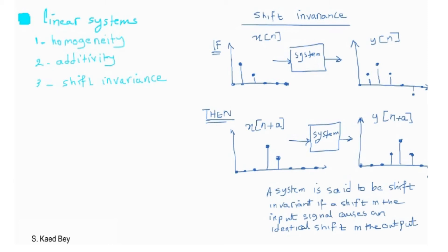For example, if the added constant a is a positive value of, say, 2, then the signal is shifted left by two samples. And if the added constant a is a negative 2, then the signal is shifted right by two samples. We sometimes refer to this as signal advance or delay, respectively.